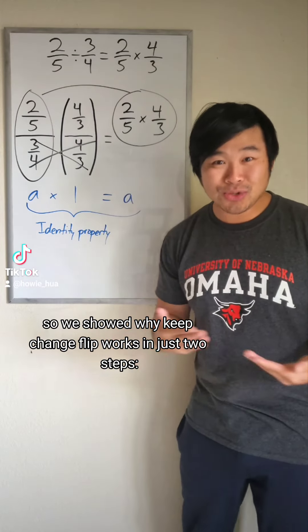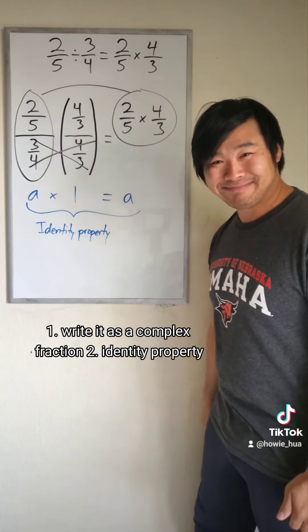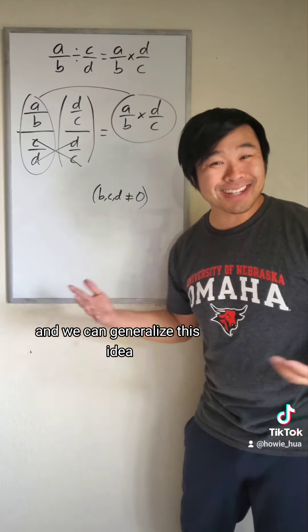So we showed why keep change flip works in just two steps. Write it as a complex fraction, identity property. And we can generalize this idea.